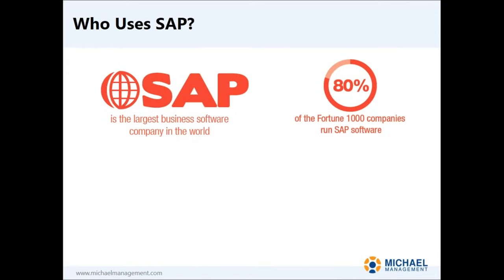When we talk about who actually uses SAP, SAP is a company — it's the largest business software company in the world. Not a lot of people realize that. When it comes to business software, SAP is the worldwide leader. In fact, 80% of the Fortune 1000 companies run SAP software. I just read another study that said 87% of the global 2000 companies run SAP software — that's just about every large business in the world.